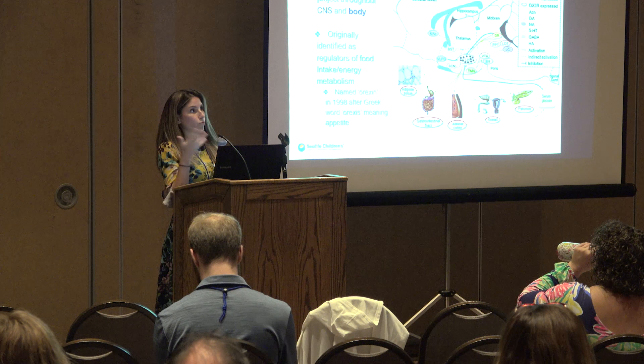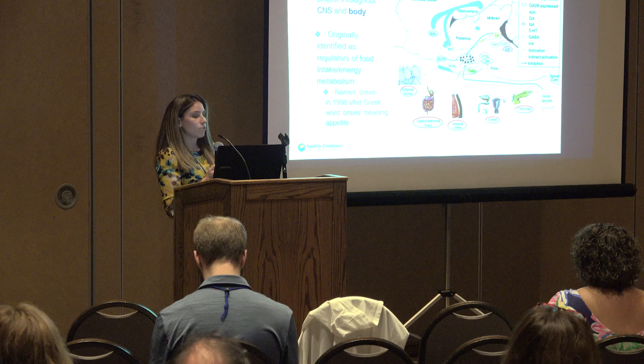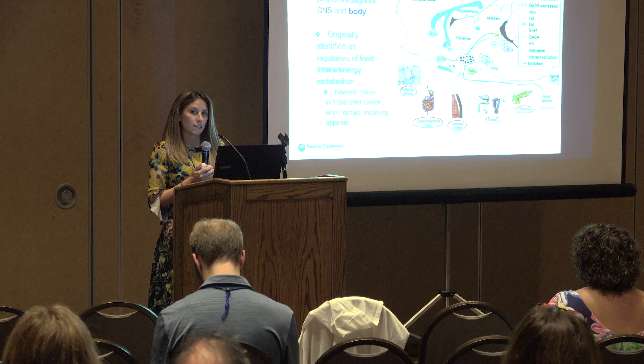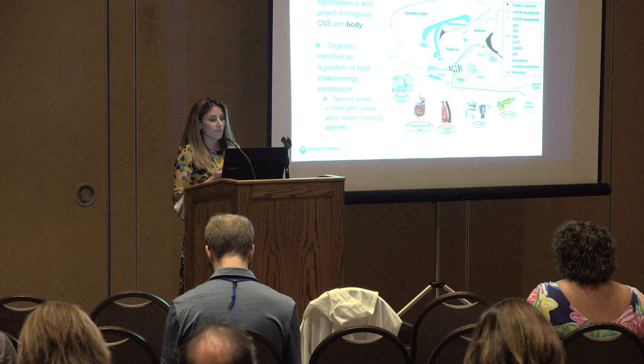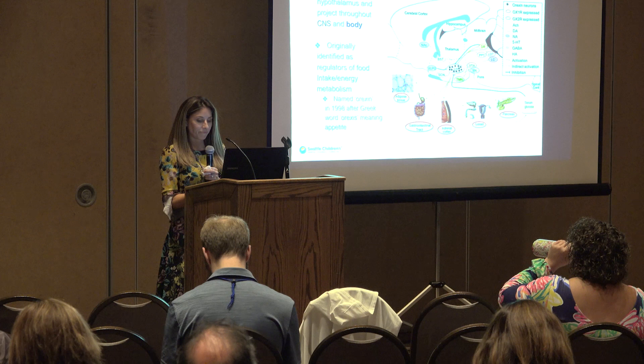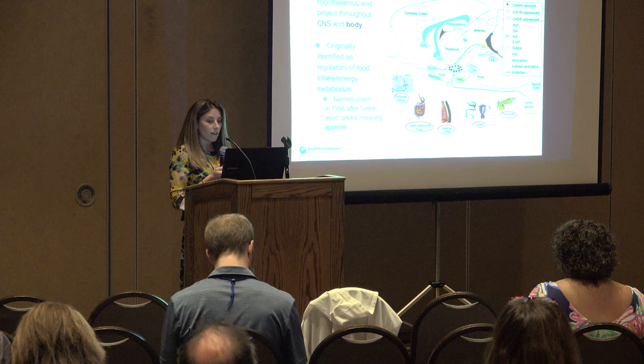Orexin as a neurotransmitter was discovered in 1998, originally in research on appetite and food intake. It was named after 'orexis,' the Greek word for appetite. It has a lot more to do with sleep-wake cycle than just that. This picture shows all the areas of the body orexin projects to — not all of them, but the key ones: adipose tissue or fat cells, the GI tract, adrenal cortex, gonads or reproductive organs, and the pancreas, among others.